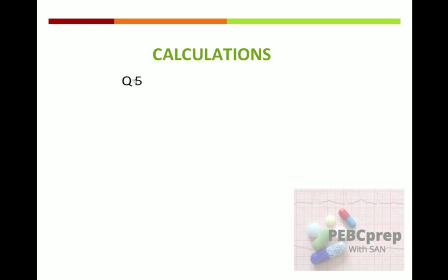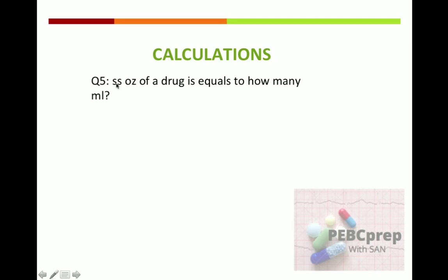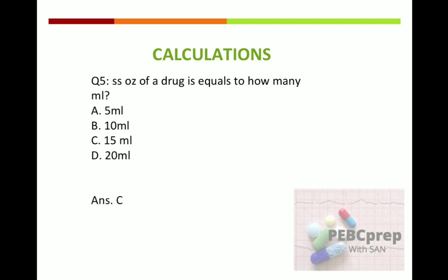The next example: 'SS' is the symbol for half. Half ounce of a drug equals how many ml? Options: A) 5 ml, B) 10 ml, C) 15 ml, D) 20 ml. If you remember that one fluid ounce equals 30 ml, then half ounce will equal 15 ml. So the answer is C.